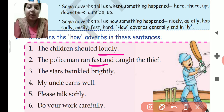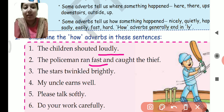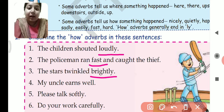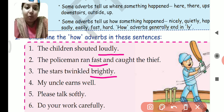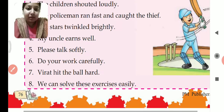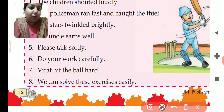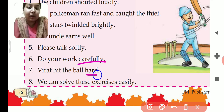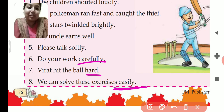Third: 'The stars twinkled brightly' — twinkled is the verb. Ask yourself how the stars twinkled — they twinkled brightly. Fourth: 'My uncle earns well' — earns is the verb. Fifth: 'Please talk softly' — softly is adding meaning and describing the verb. Sixth: 'Do your work carefully' — carefully. Seventh: 'Virat hit the ball hard' — hard. Eighth: 'We can solve these exercises easily' — easily. I hope question number 1 is clear.